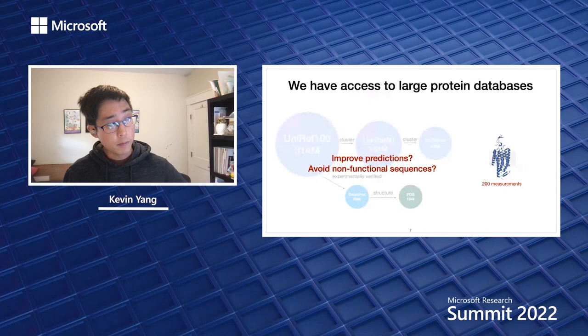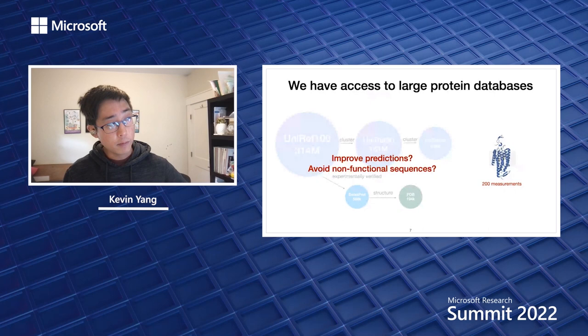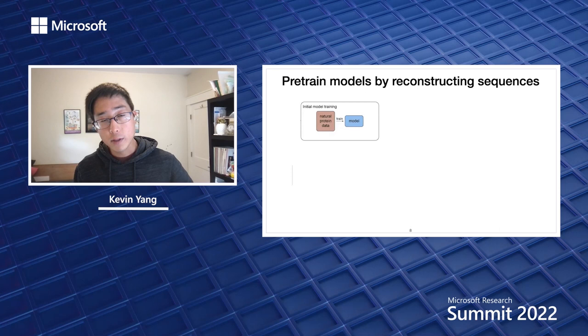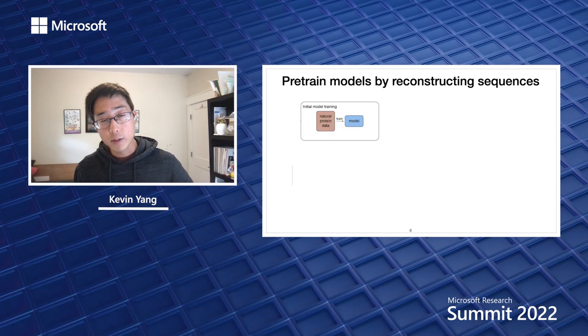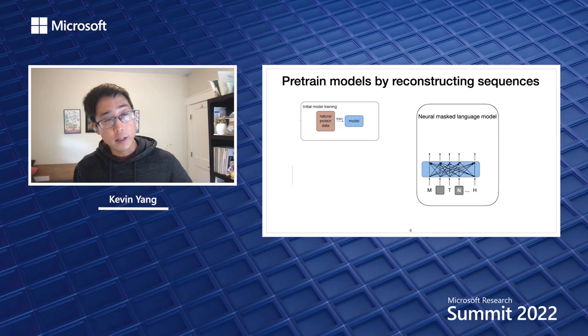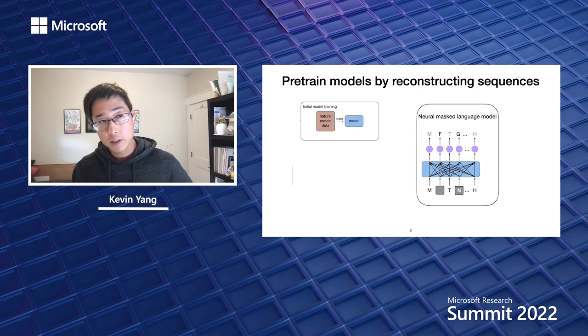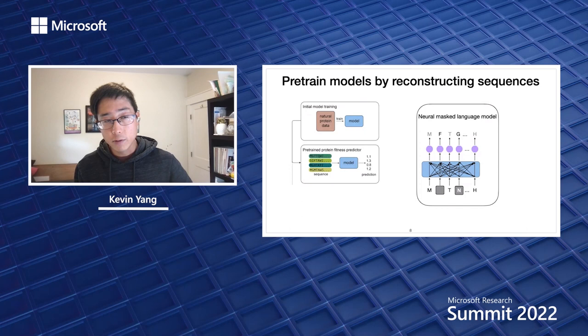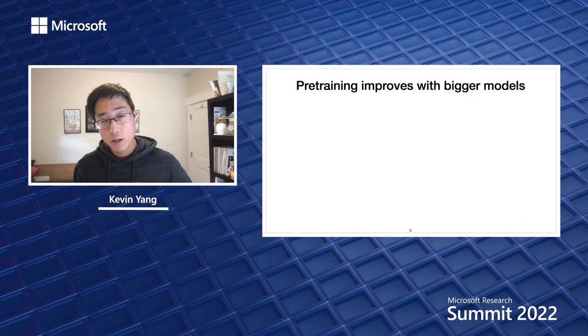How can we use these to improve predictions and avoid non-functional sequences? One way is the pre-train fine-tune paradigm: initially train on natural protein data without labels. Typically this uses a masked language model where you take the sequence, corrupt it, run it through a neural net, and the network learns to reconstruct the sequence. Then you hope whatever is learned from natural sequences helps make better predictions on downstream fitness tasks. Across different model architectures, increasing the number of parameters gives better pre-training performance and more accurately reconstructed sequences.